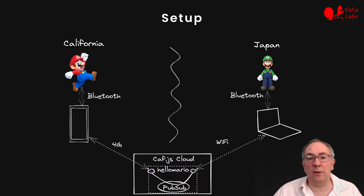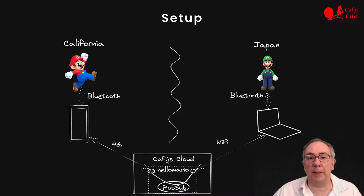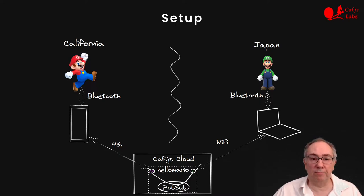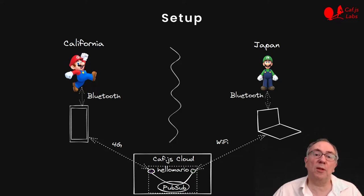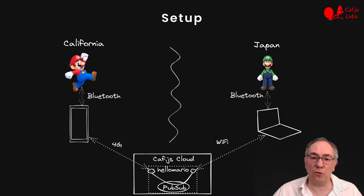For the demo, let's assume that Luigi and my laptop are very far away — in Japan, for example — and Luigi connects to it with Bluetooth. Super Mario is here in California, connected to my phone. All the interactions between the phone and the laptop are via the Kavius cloud, using the Hello Mario app that I have just deployed.